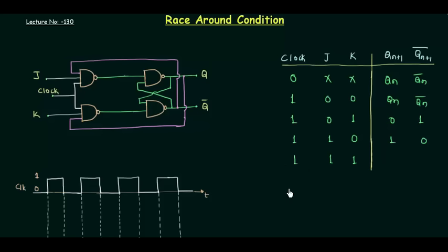But there was one problem in the JK flip-flop also: when J is 1, K is 1, and the clock is 1, we have something called the race around condition. The output starts racing, which we will see in a moment. If you really want to use the JK flip-flop, you have to overcome this condition. This is a very important presentation, and from it you will understand the use of master-slave flip-flops.